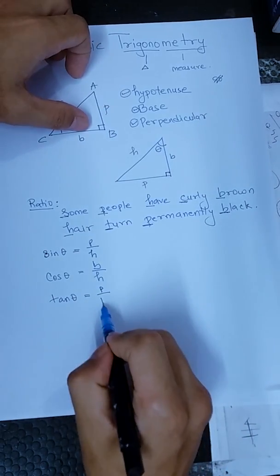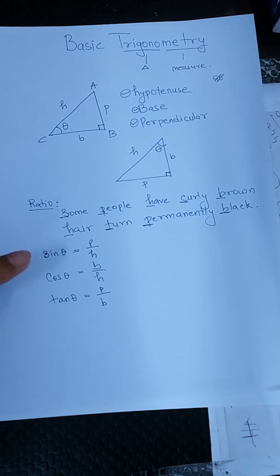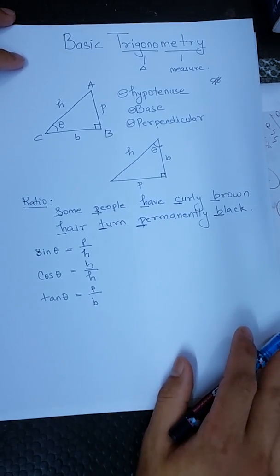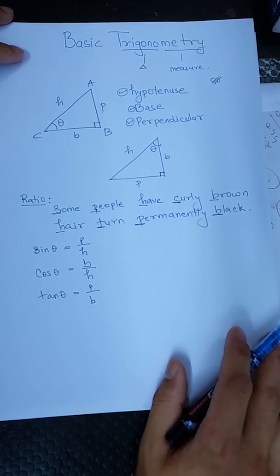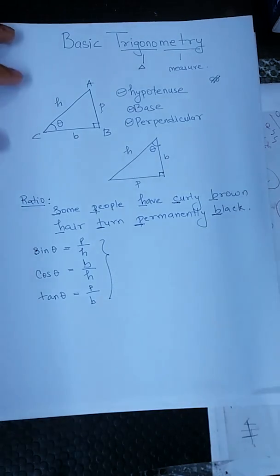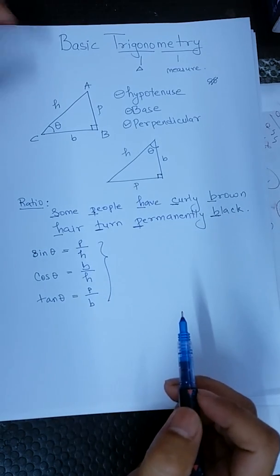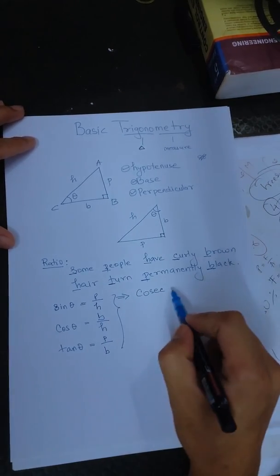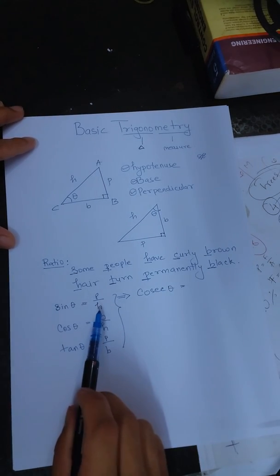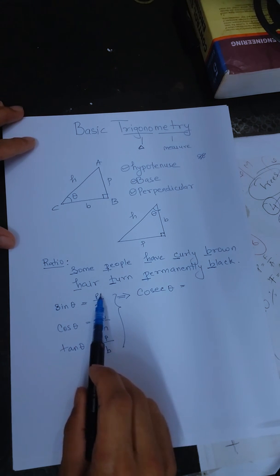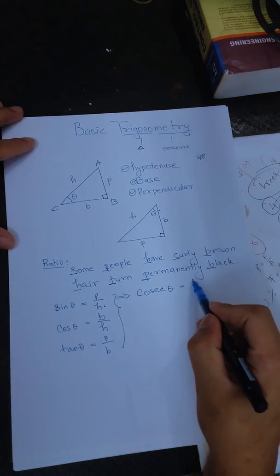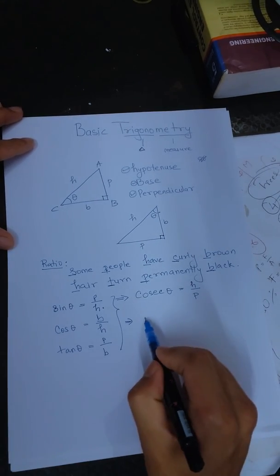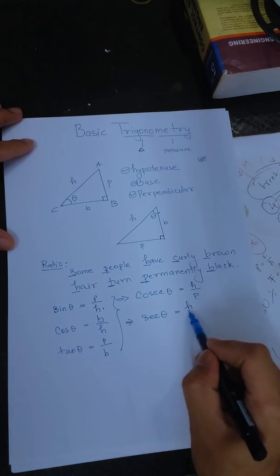Some people have curly brown hair, which is permanently black. This is cos theta. The opposite of the numerator and denominator — this is H by B.